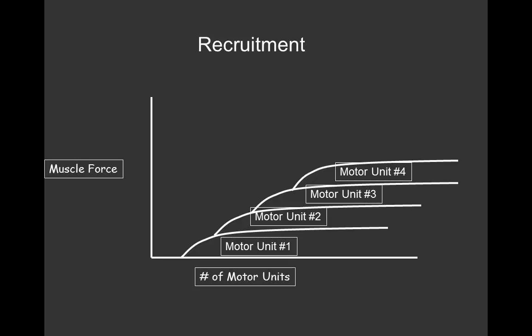Here we see the method of recruitment. As more motor units are recruited, they increase in size and increase in force production. Motor unit 1 comes on first. If you need more muscle force, motor unit 2 is recruited, motor unit 3, and motor unit 4 until that force requirement is met. When the force requirement decreases and you derecruit these motor units, motor unit number 4 turns off first, followed by 3, 2, and then 1.